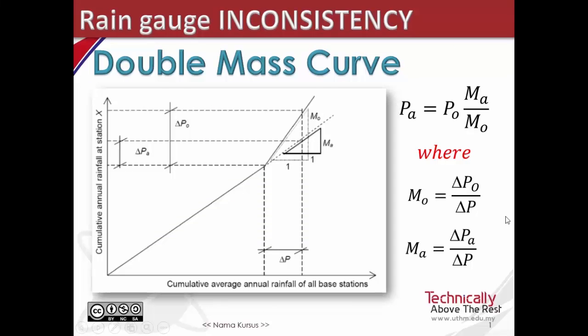Double mass curve analysis is a technique commonly employed to detect changes in data collection procedures or conditions at a given location. The changes may result from changes in instrumentation, changes in observation procedures, or changes in gauge location or surrounding conditions.